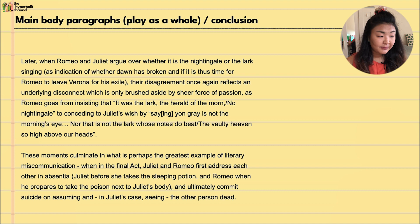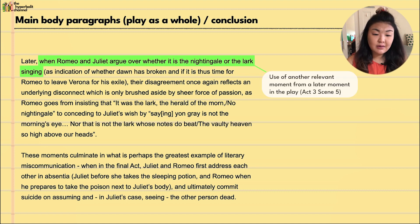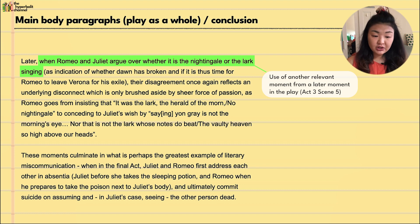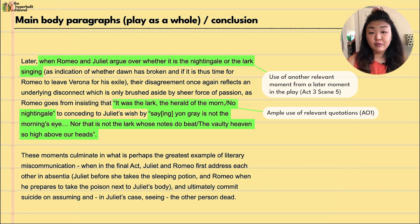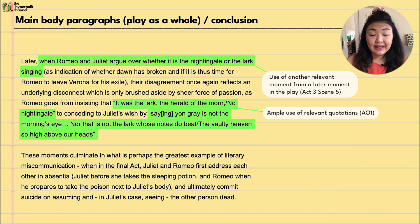The student looks at another later moment: when Romeo and Juliet argue over whether it is the nightingale or the lark singing, indicating whether dawn has broken and whether it is time for Romeo to leave Verona for his exile. Their disagreement again reflects an underlying disconnect, only brushed aside by sheer force of passion. Romeo goes from insisting 'it was the lark, the herald of the morn, no nightingale' to conceding to Juliet's wish. This suggests they may love each other intensely but are somewhat lacking in fundamental mutual understanding, which contributes to their ultimate tragedy.